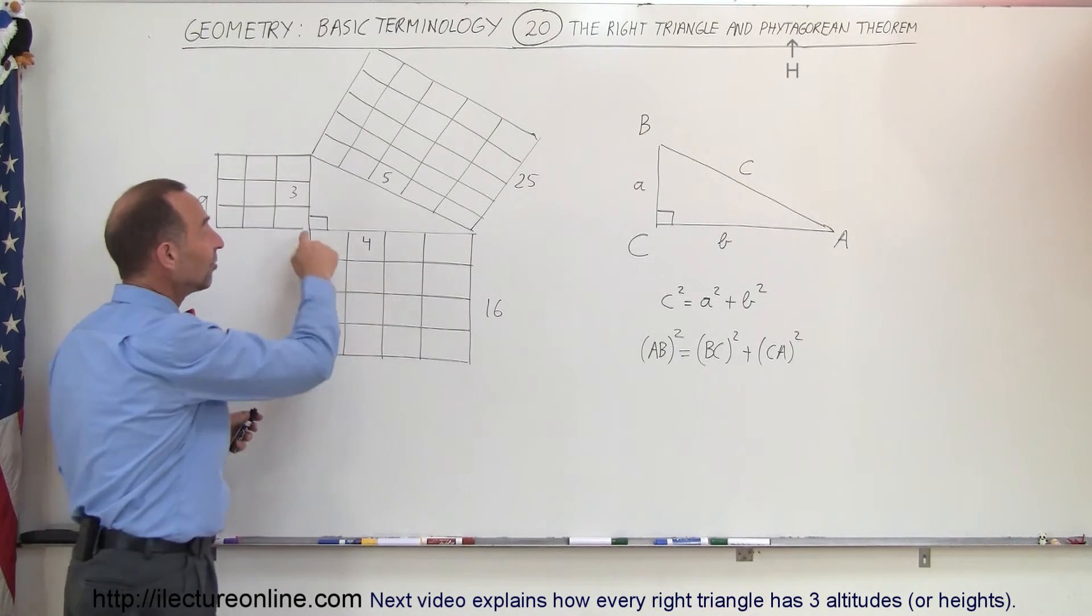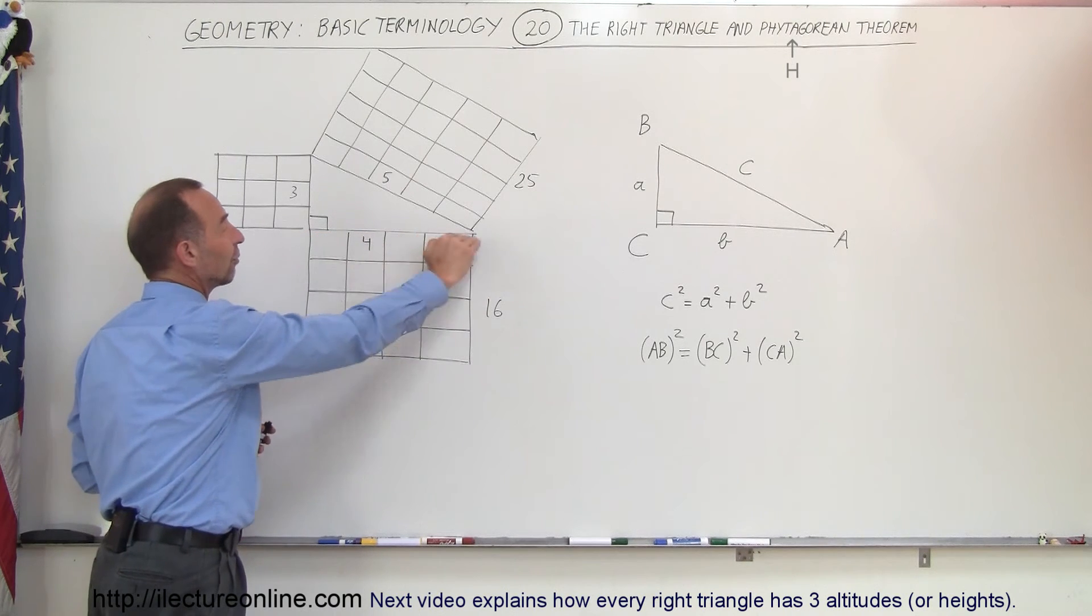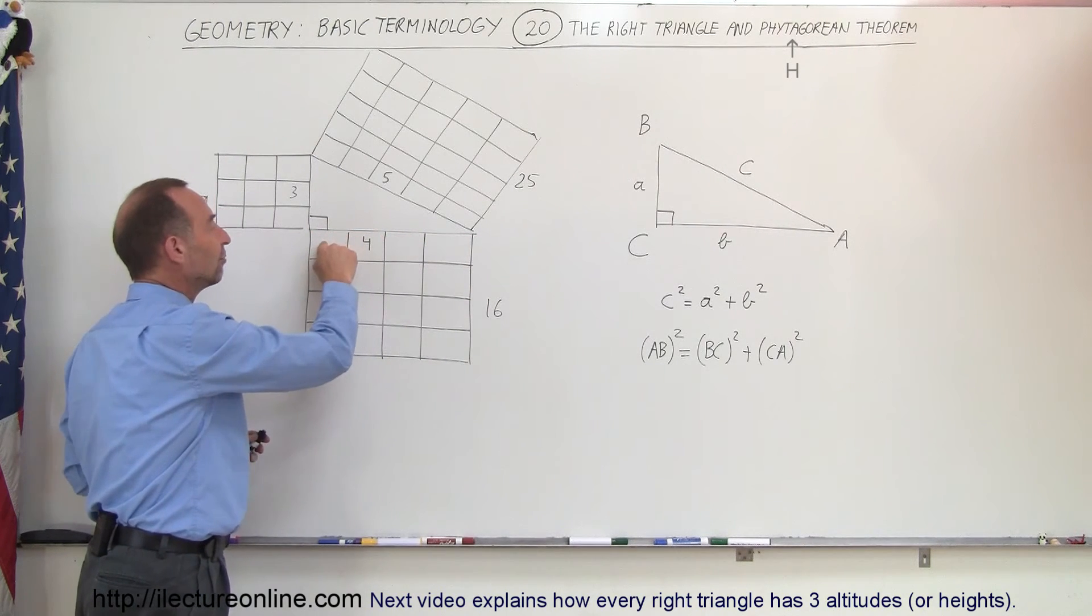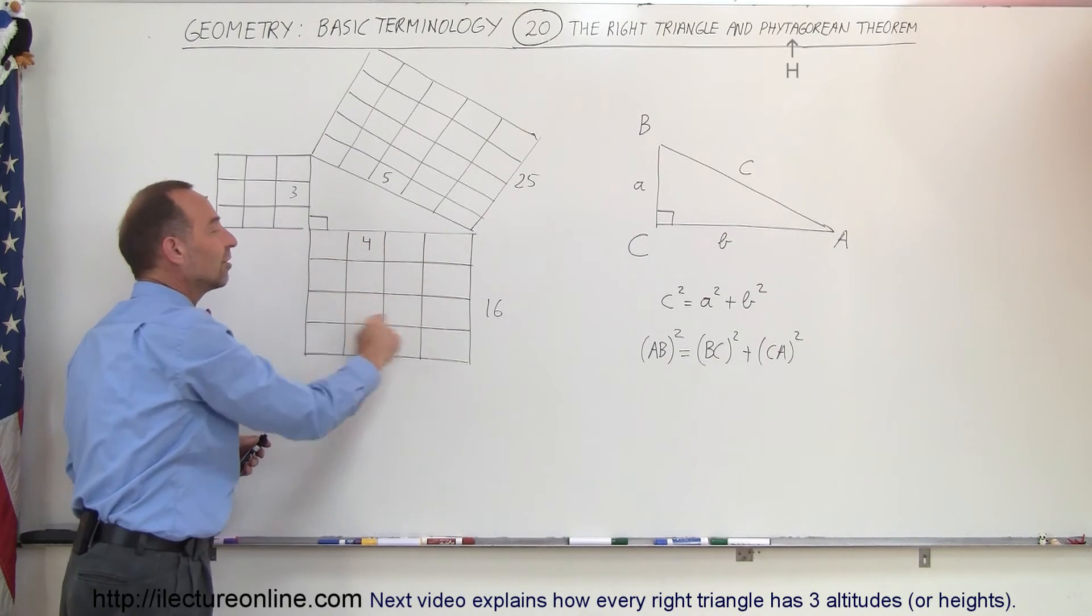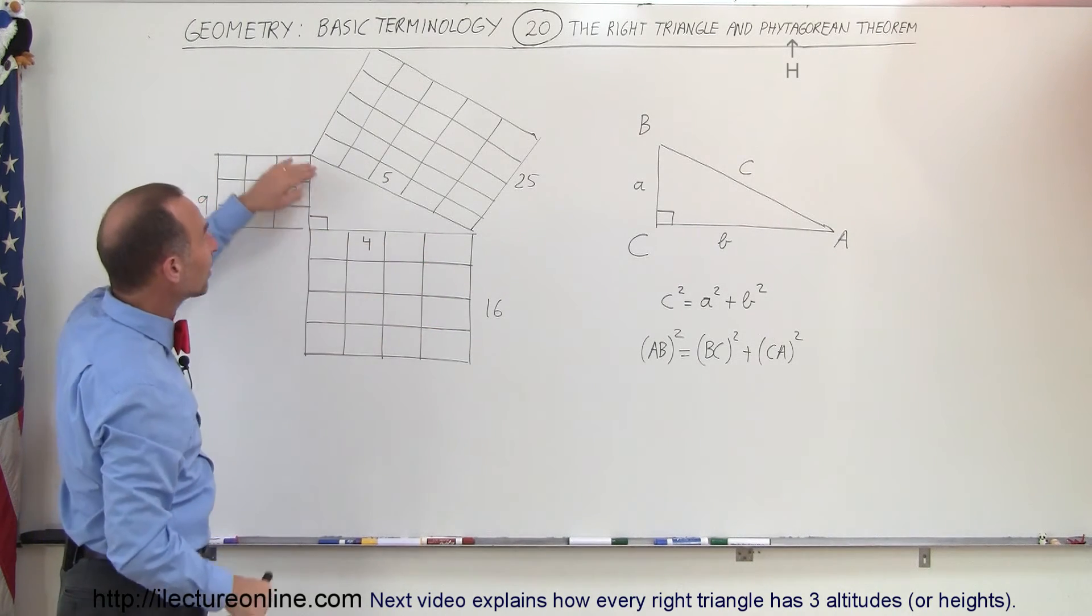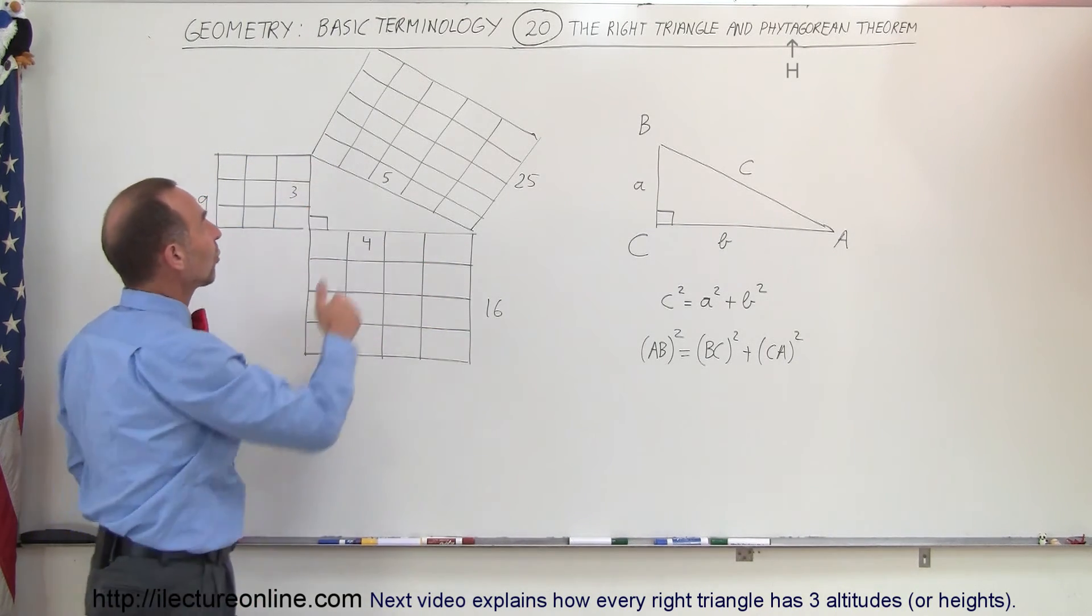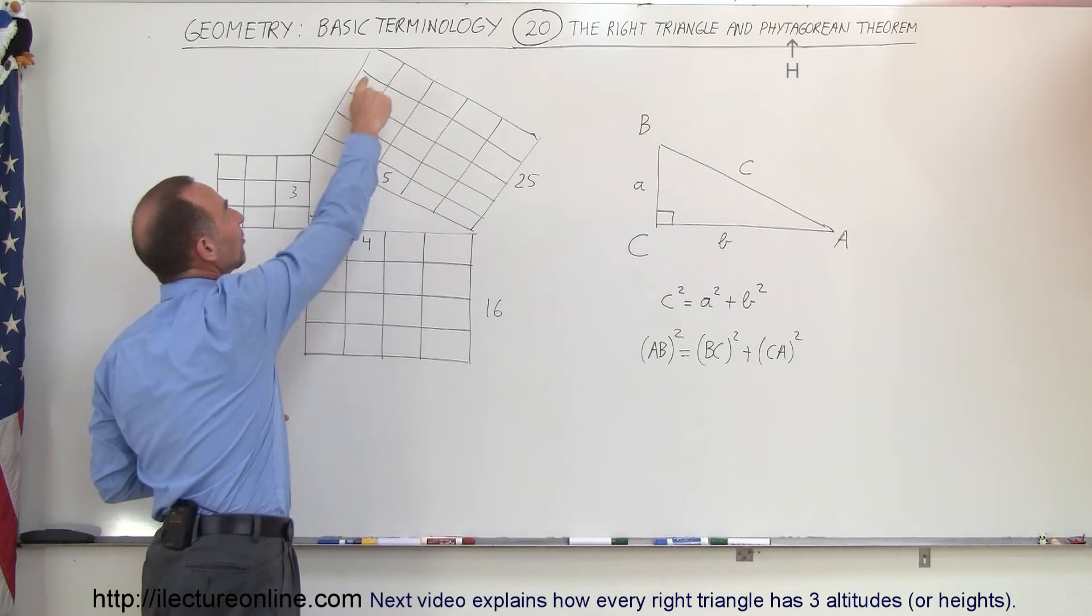If you do the same with this side right here, which has a length of four units, and you square that side, you'll end up with four times four, or 16 of these little squares. And then finally, when you take the hypotenuse and you square the side, you'll end up with 25 squares.